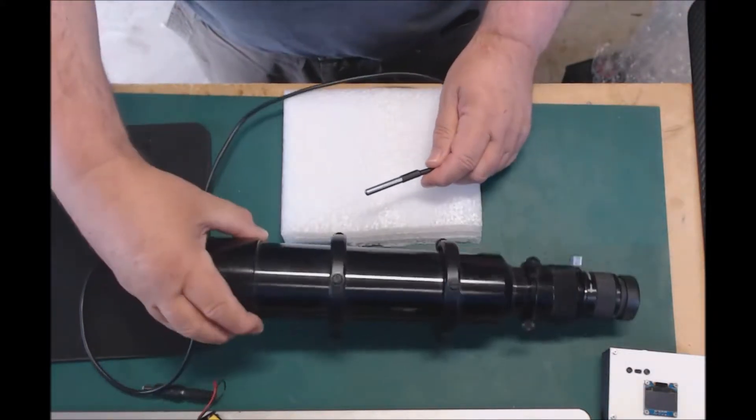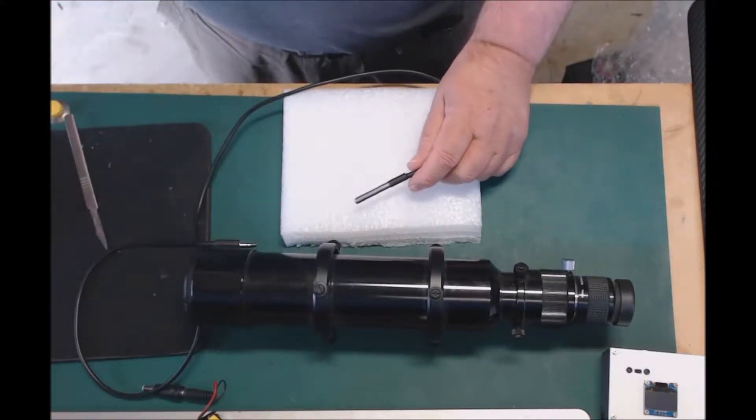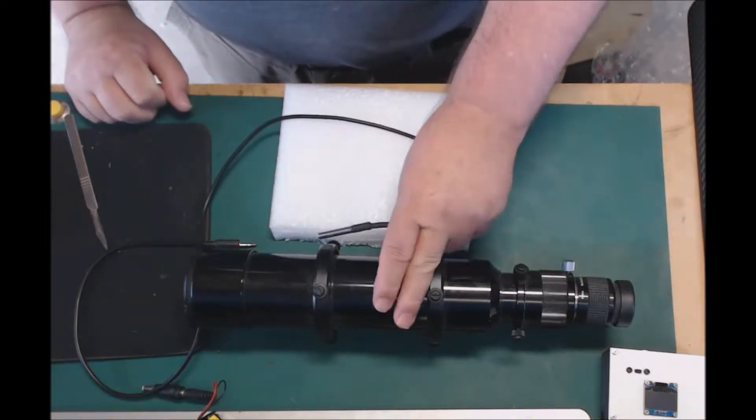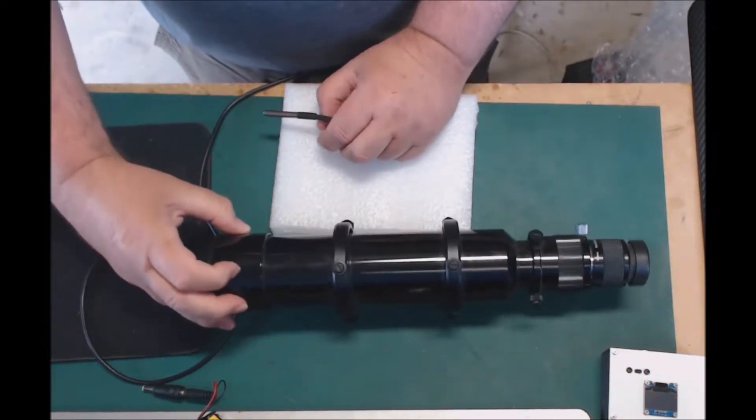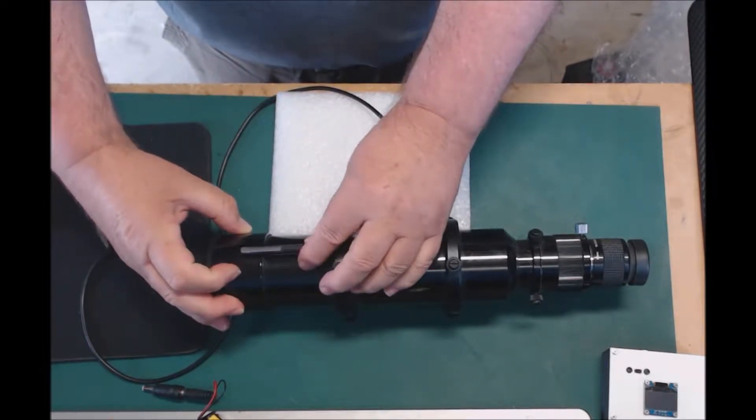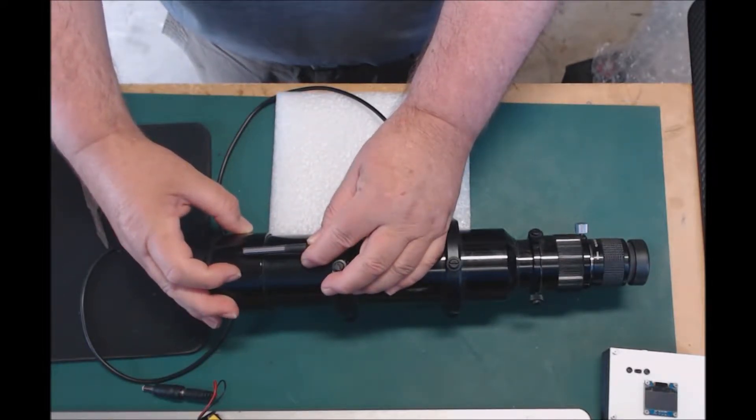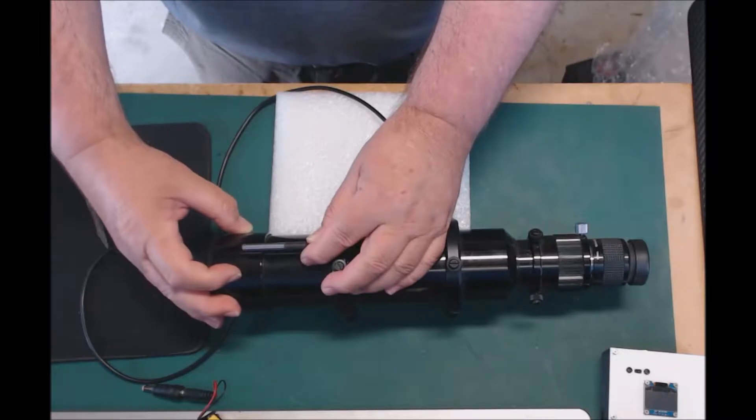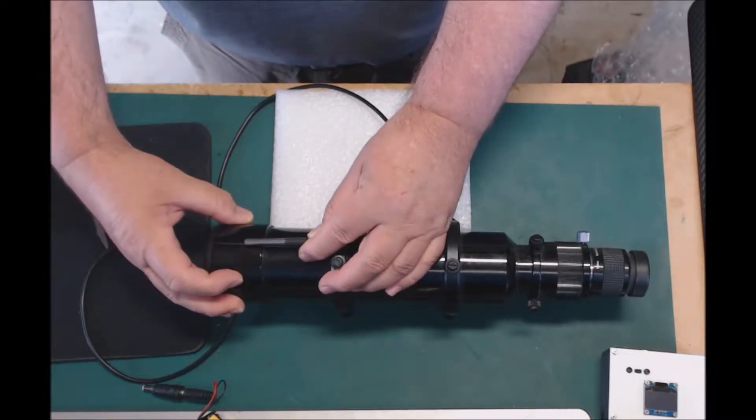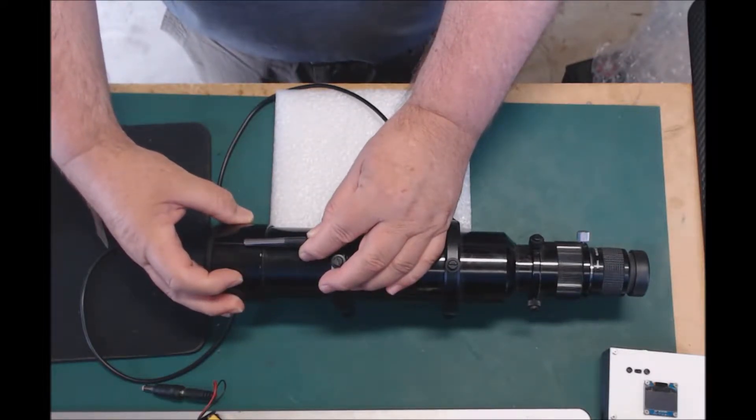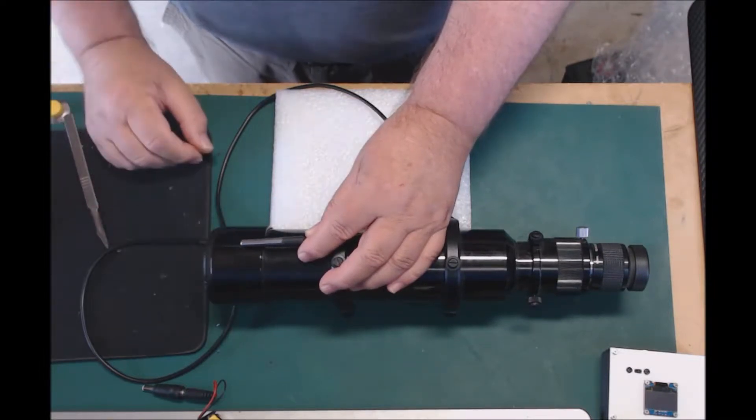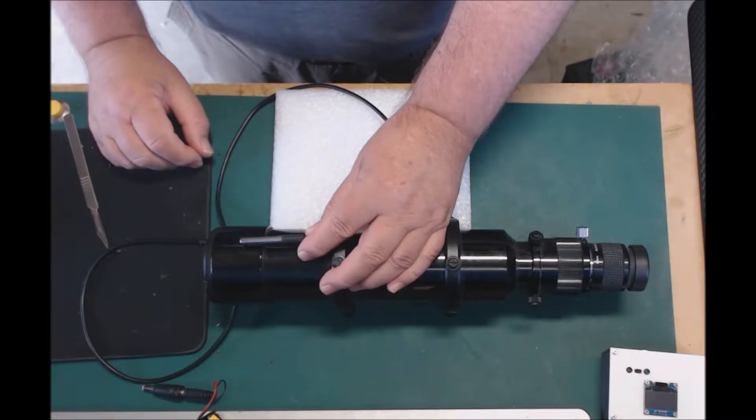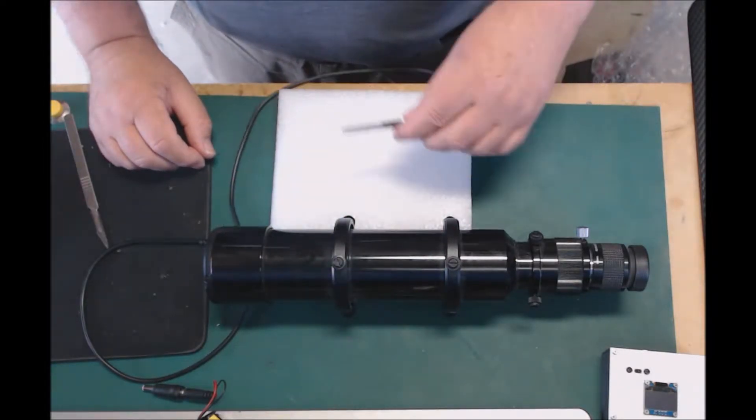I have here a little demo guide scope, and the optics are at this end. There's no point putting the focuser temperature probe near the optics because the thing that really determines the change in critical focus position as the temperature changes during the evening is really the tube.